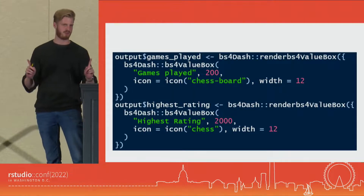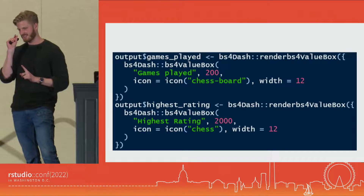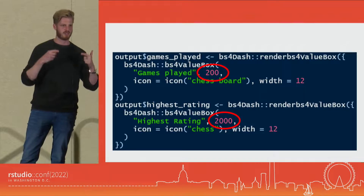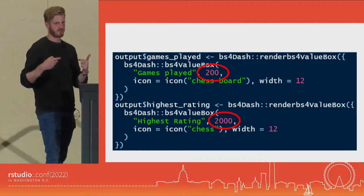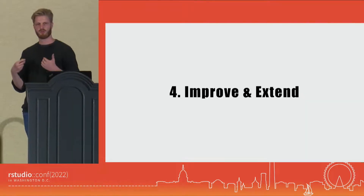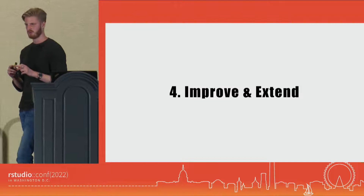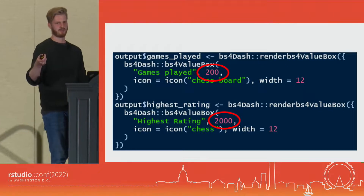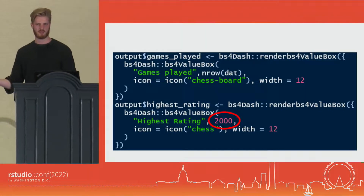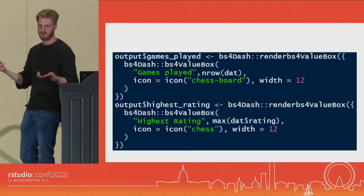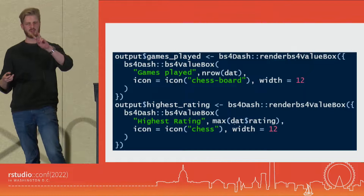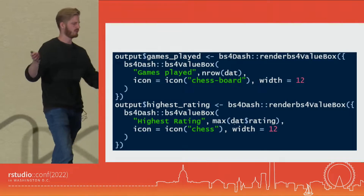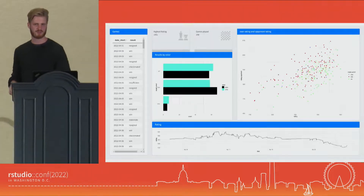Now comes the part where I have to admit I lied to you — you do have to write a tiny bit of code. The value boxes' values are hard-coded, so if the data changes, the values stay the same. That brings us to the fourth and final step: improve and extend. Games played is just the number of rows of my data table, and the highest rating is just the max of my rating column. You have to write these two tiny lines of code, and I think all of you can do that. And then you get your dashboard.